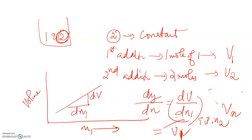In the second experiment, we keep component one constant and keep on adding component two. The same procedure is followed and the slope of the graph gives V̄₂. This is the direct method for the determination of partial molar volume.